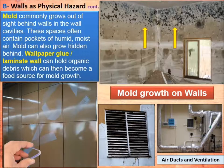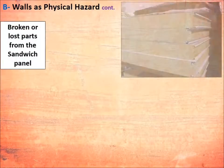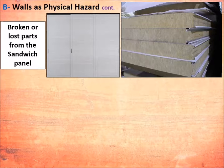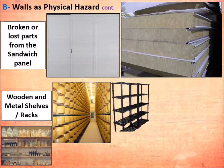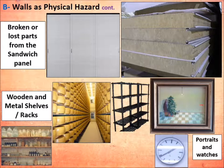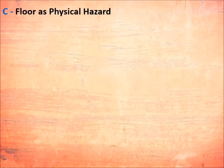Other wall physical hazard factors include air ducts and ventilation, broken or lost parts from sandwich panels — which can also lead to insect growth inside them — and wooden or metal shelves or rack systems on the wall, including any portraits or fixtures mounted on the walls.